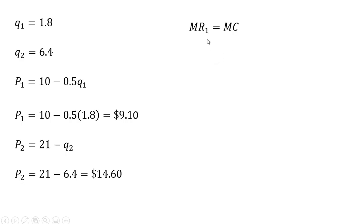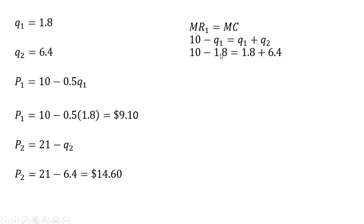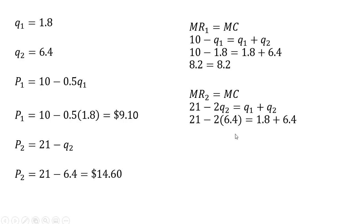As a final check: in order to maximize profit, the marginal revenue in each market should equal marginal cost. Let's evaluate marginal revenue at the profit maximizing output levels and evaluate marginal cost. Plugging 1.8 in for Q subscript one, we do get marginal revenue equal to marginal cost at the profit maximizing output level. Likewise, plugging in our profit maximizing output levels for market two, we see marginal revenue equals marginal cost. So in order to maximize profit, this condition must hold. Okay, I will stop here. Thank you.